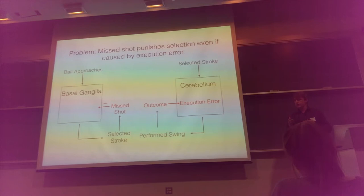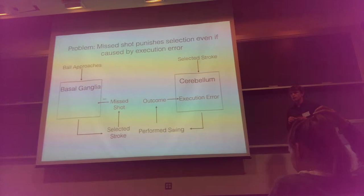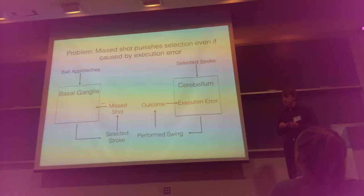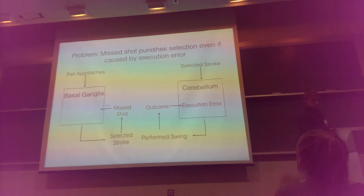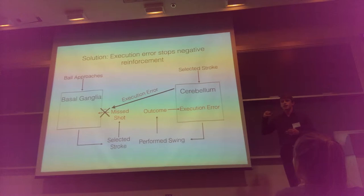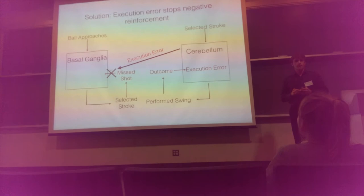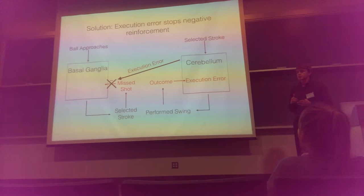If these two systems are going to communicate, maybe there's some way these two brain structures communicate. Indeed, recent synaptic tracing studies have found a connection from the cerebellum to the basal ganglia in the brain, and this has motivated a hypothesis for how the brain might solve this problem. Specifically, the hypothesis is that execution error is sent along this connection from the cerebellum to the basal ganglia, and it is used to stop that negative reinforcement when you have a missed shot. So when you get a negative reward and know it was caused by the execution system, the execution system has a way to tell the selection system: don't punish the selection you made, it was actually okay.